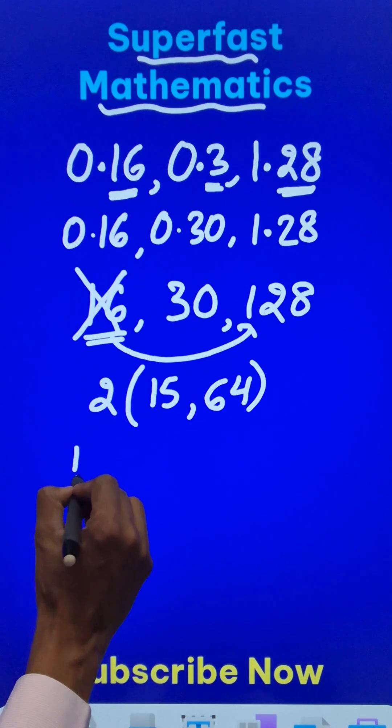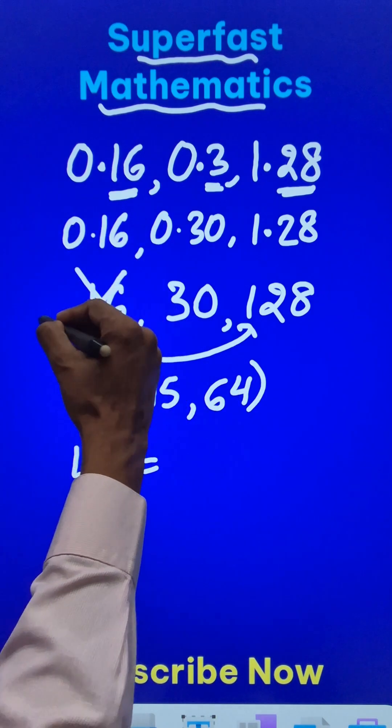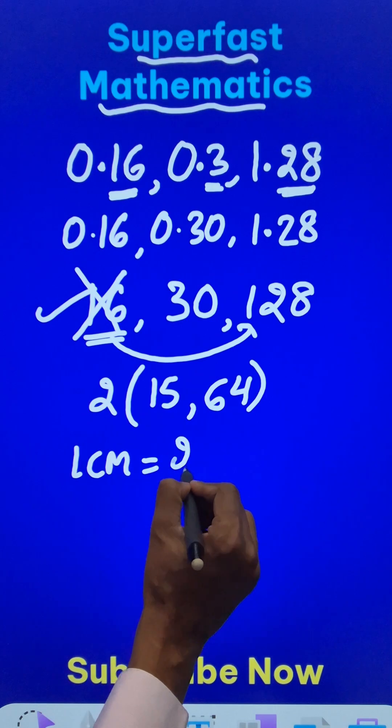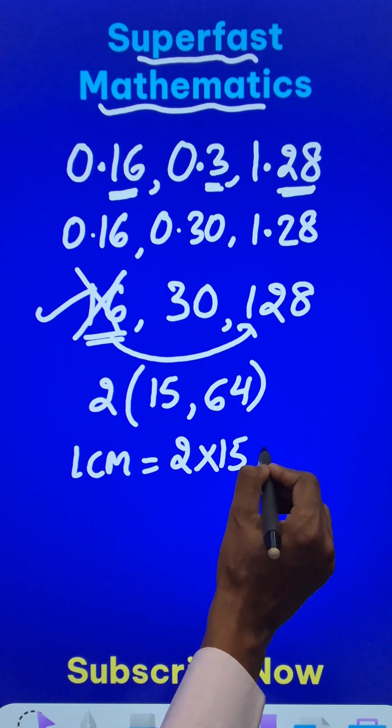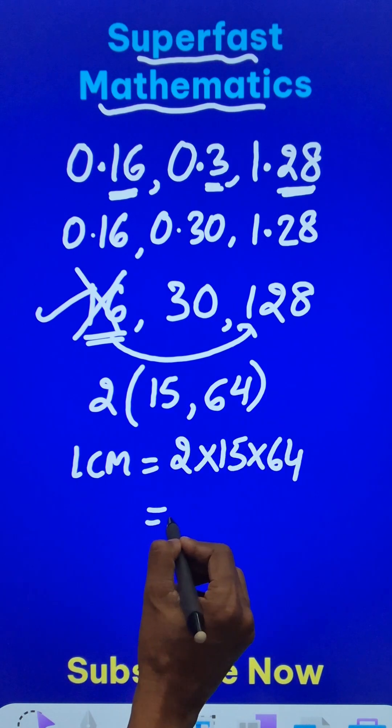So these are coprime and so the LCM of the numbers without decimal will contain 2 times 15 times 64 and this comes out to be the number 1920.